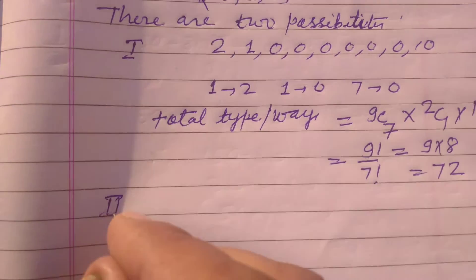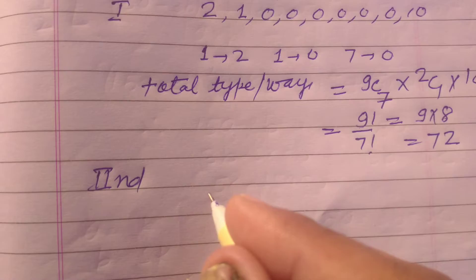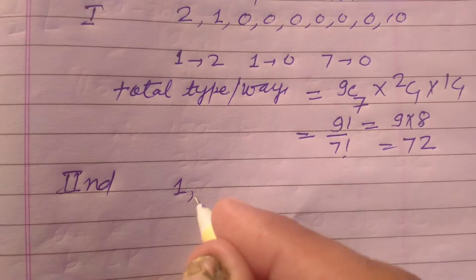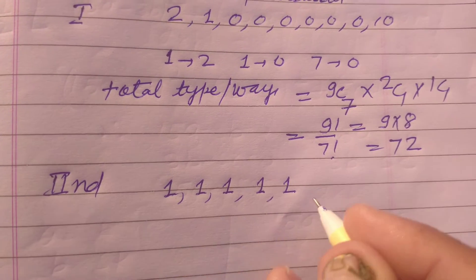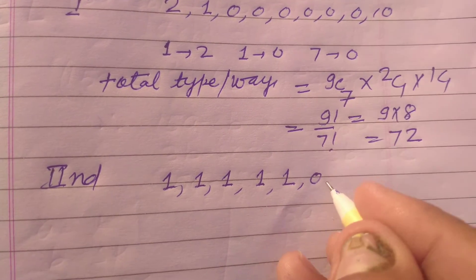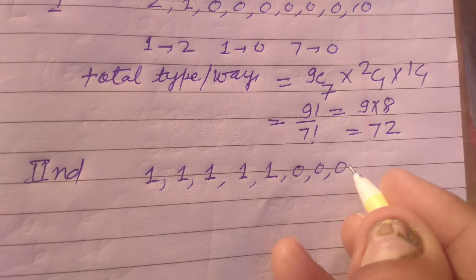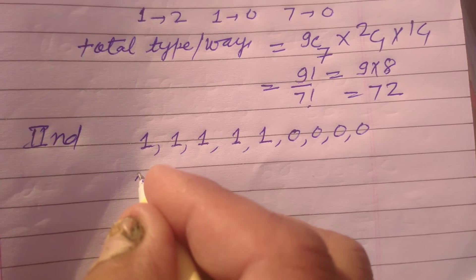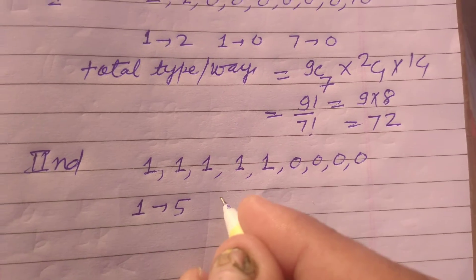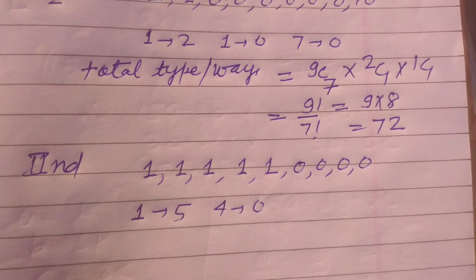And the second possibility is 1, 1, 1, 1, 1, five times 1 and others are 0, four 0s. One, two, three, four. So here one is 5 and four is 0.